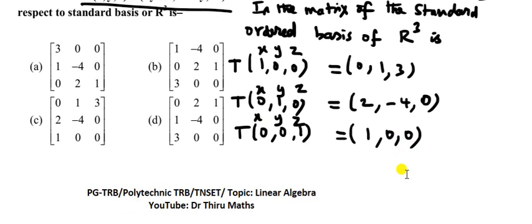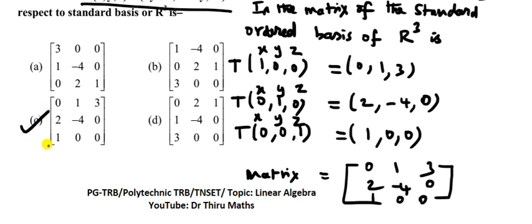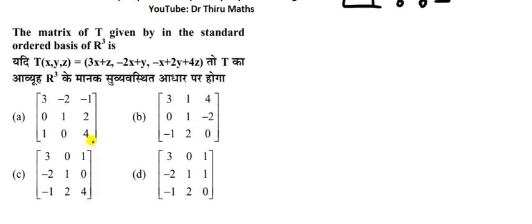Using the matrix formula, assemble the columns. The matrix is: first column (0, 1, 3), second column (2, −4, 0), third column (1, 0, 0). So the final matrix is: [0, 2, 1; 1, −4, 0; 3, 0, 0].